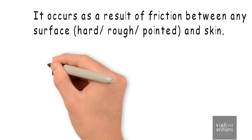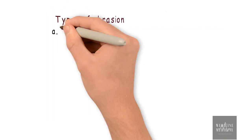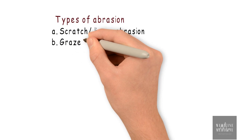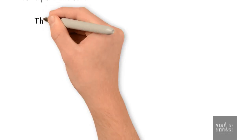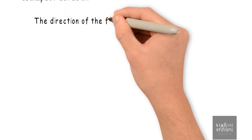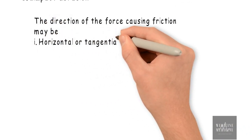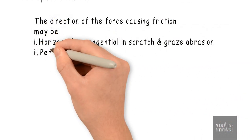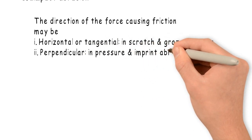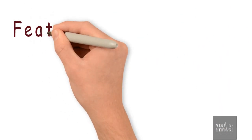Talking about types of abrasion, we have scratch abrasion, grease abrasion, pressure abrasion, and impact abrasion. The direction of force causing friction may be horizontal or tangential as seen in scratch and grease abrasion, or may be perpendicular as seen in pressure and imprint abrasion.